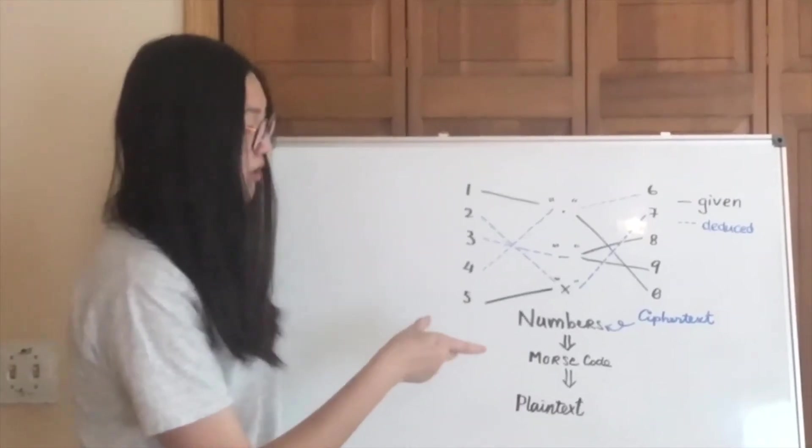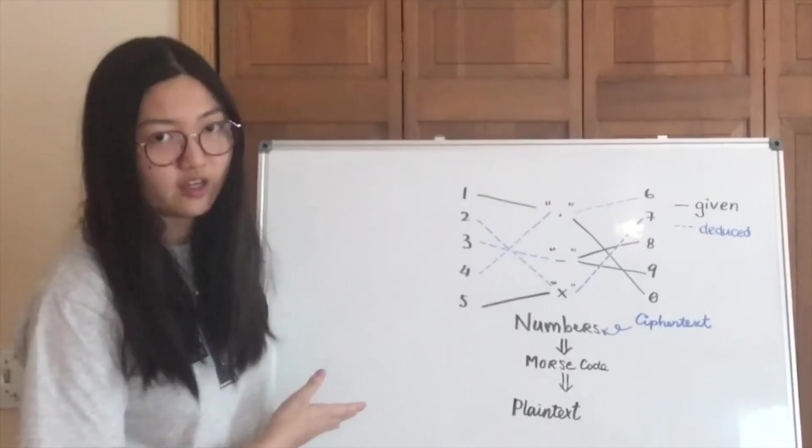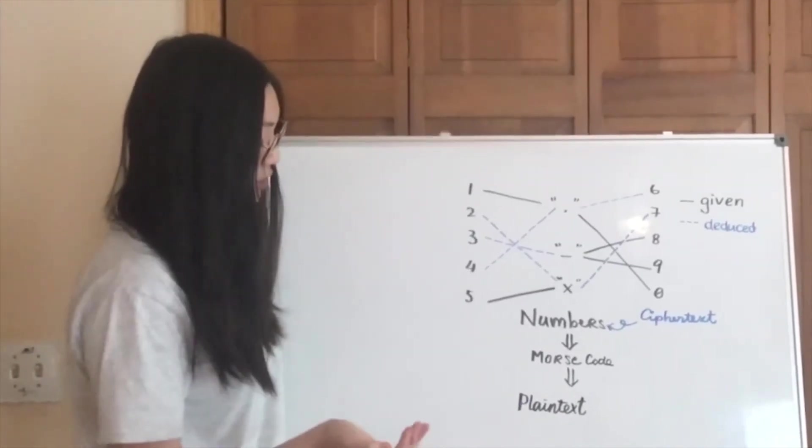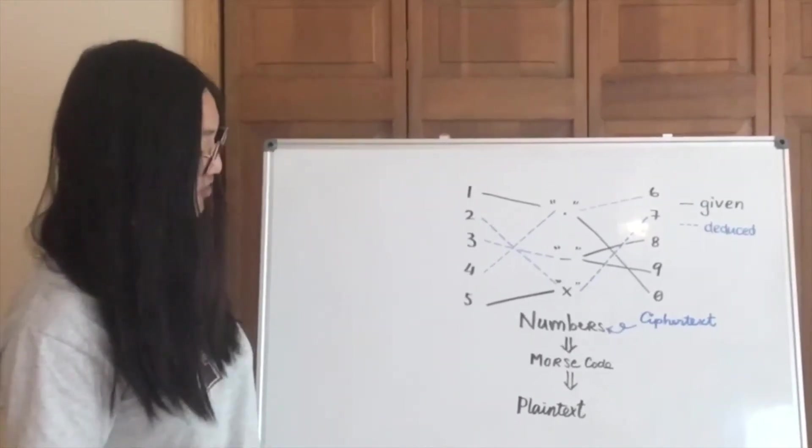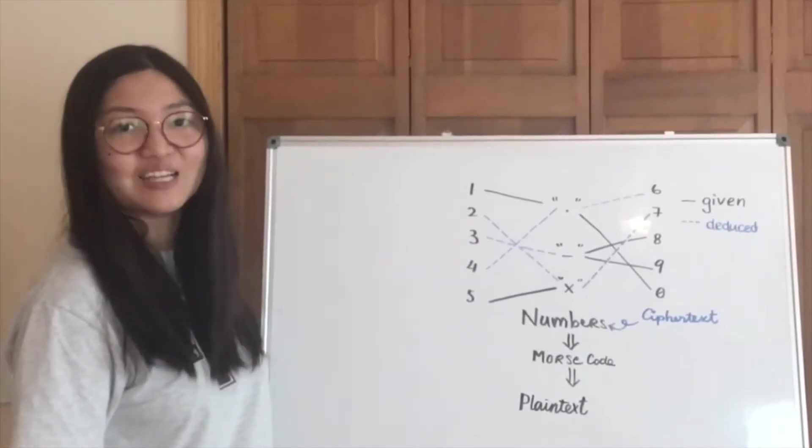So it will be up to you to figure out what the rest of them mean. And then once you know all of them, you can transfer all the numbers into Morse code, which then you'll use your super knowledge and your memorization of the Morse code to transfer it into plain text. Super easy!